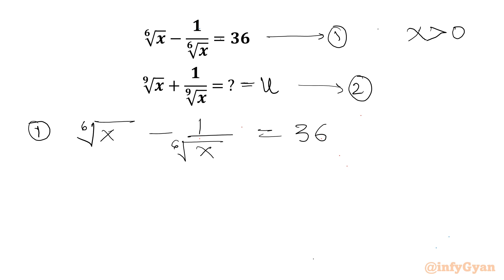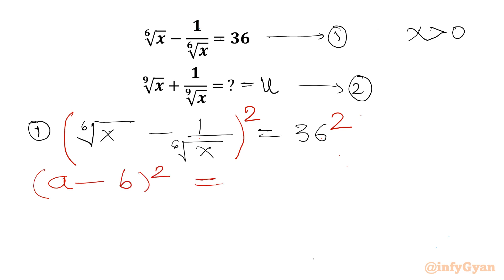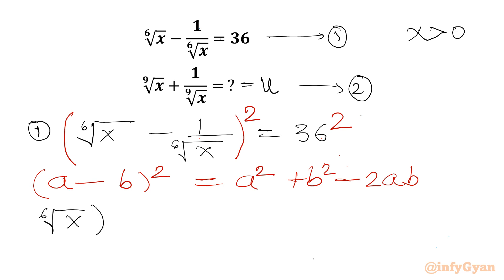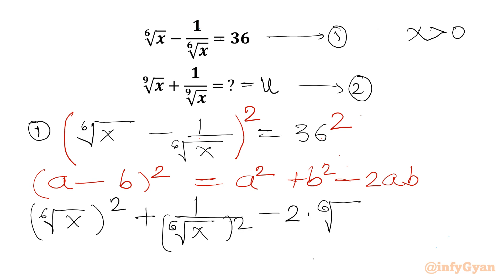Let us consider squaring both sides. The identity (a minus b) whole square equals a square plus b square minus 2ab will come into picture. Applying this, the left hand side becomes: 6th root of x whole square, plus 1 over 6th root of x whole square, minus 2 times 6th root of x times 1 over 6th root of x. The right hand side is 32 squared, which is 1024.